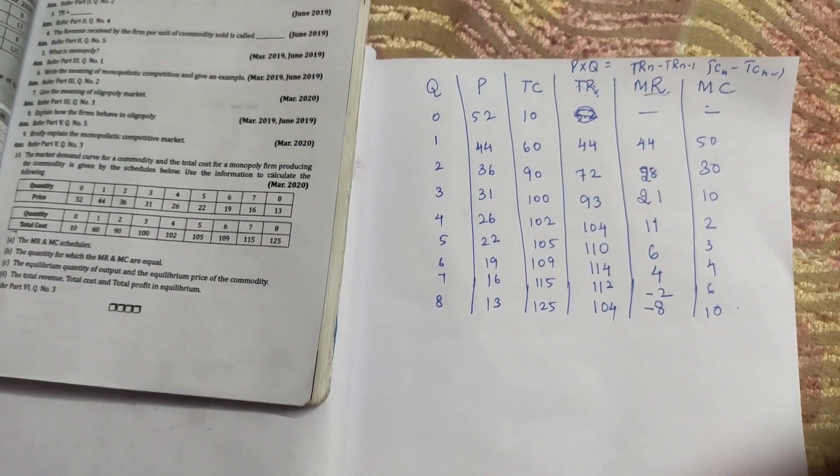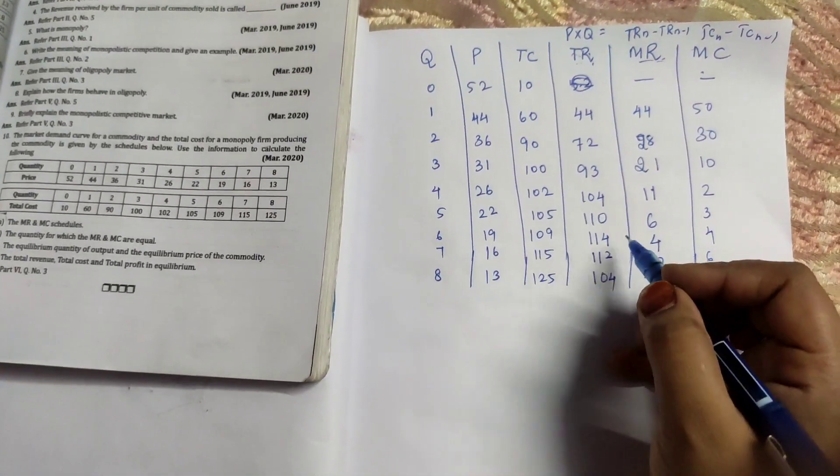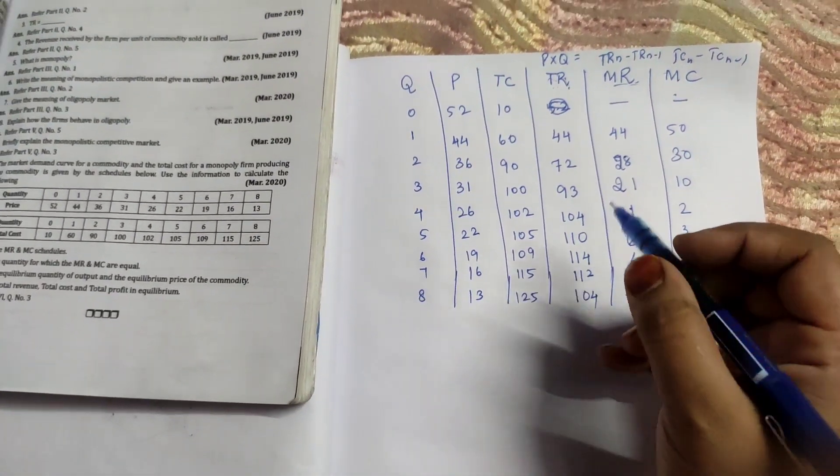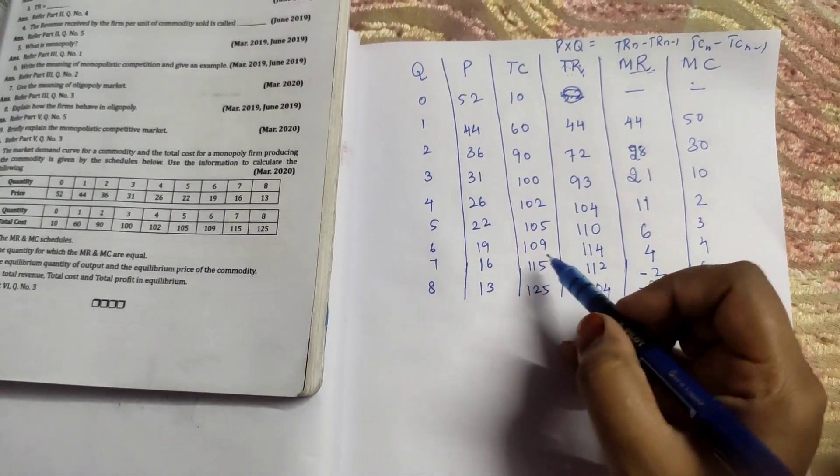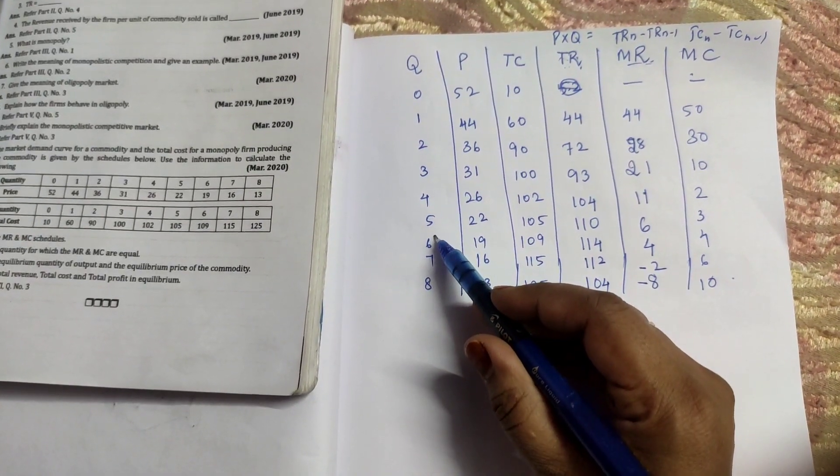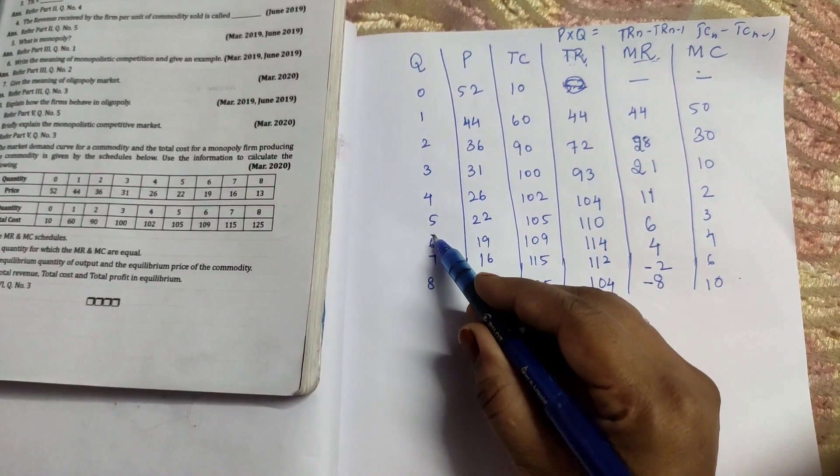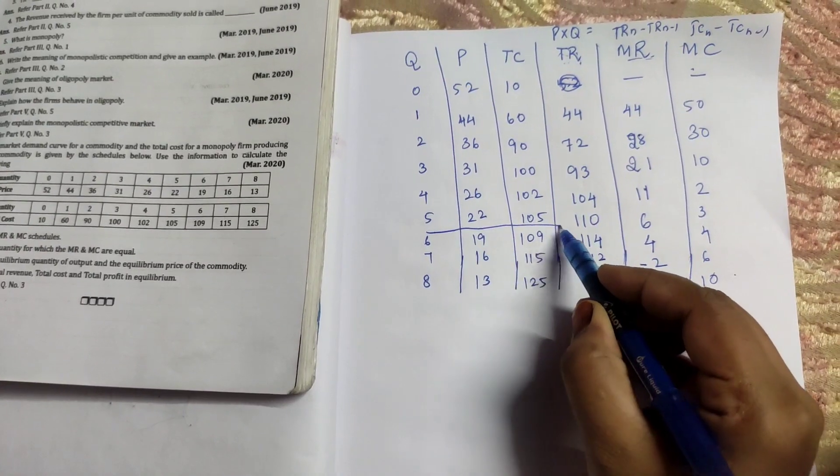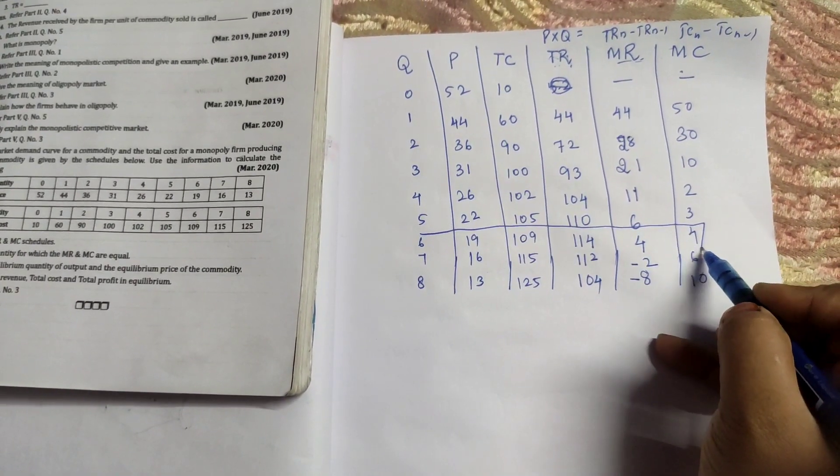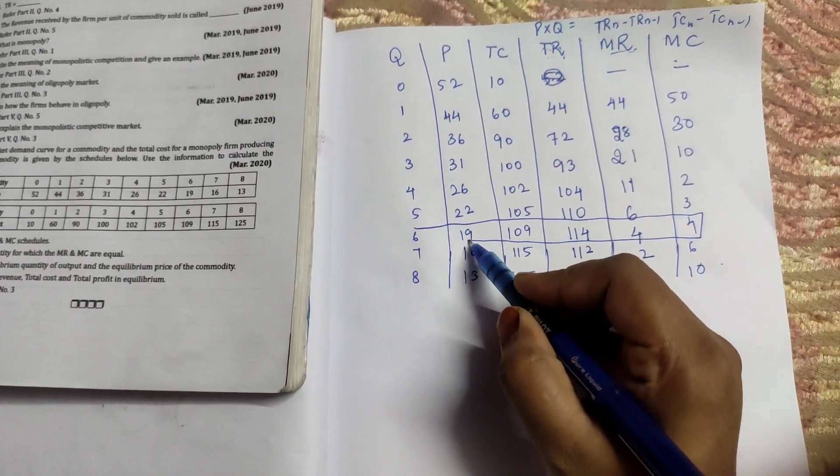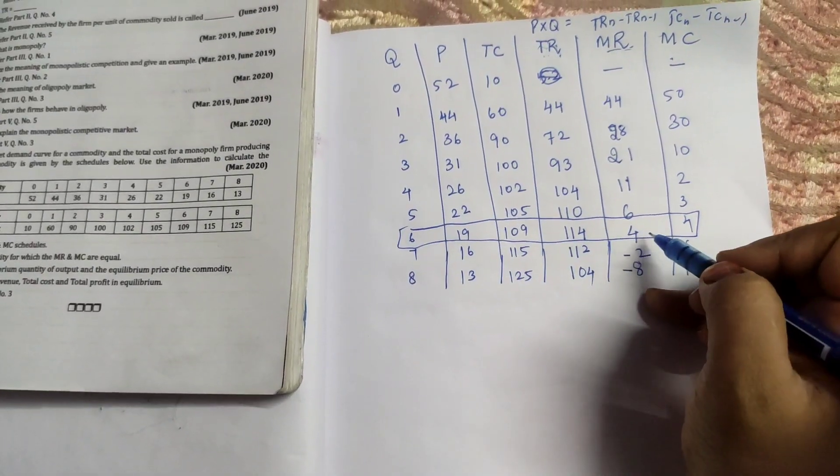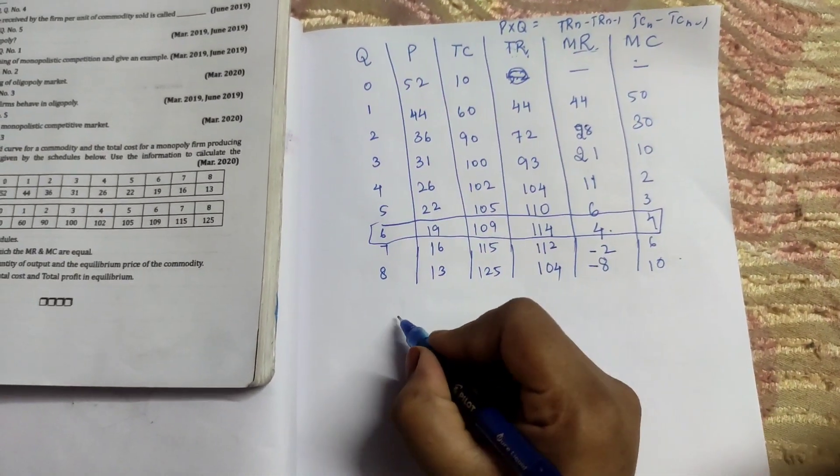By this we have completed the MR and MC schedule. Where the MR and MC schedule is in this, here you can see that MR is also 4, MC is also 4.